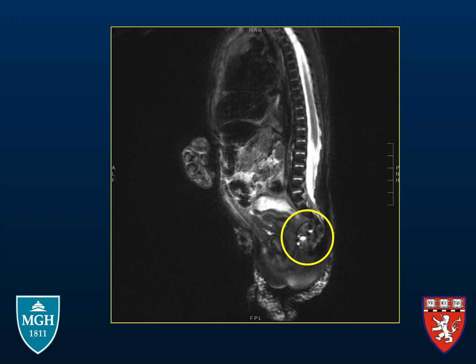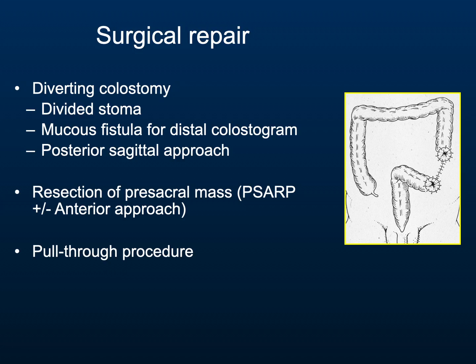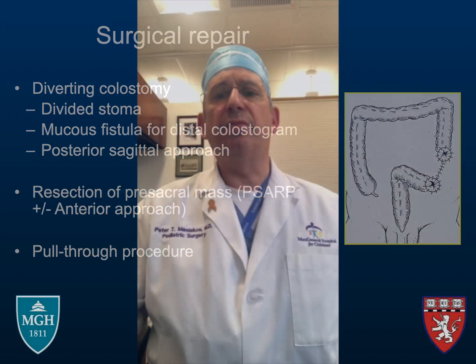The child had a diverting colostomy with a divided stoma. In three months, the child underwent a contrast study to determine the length of colon, and then we proceeded to resect the presacral mass through a PSARP and anterior approach, and finally pull the rectum down through the anus after a mucosectomy.